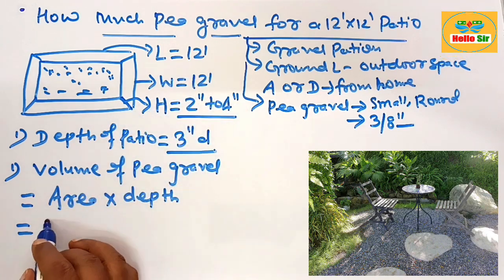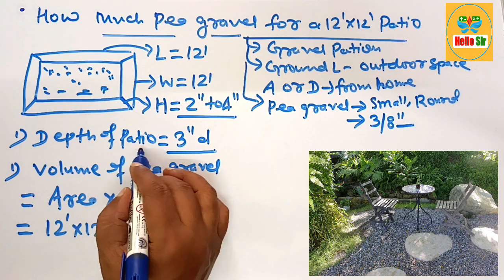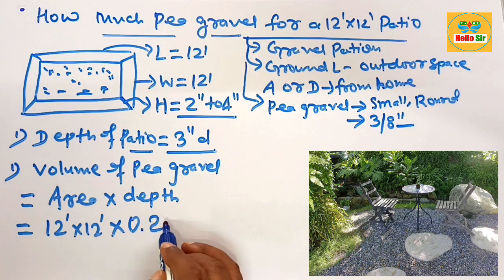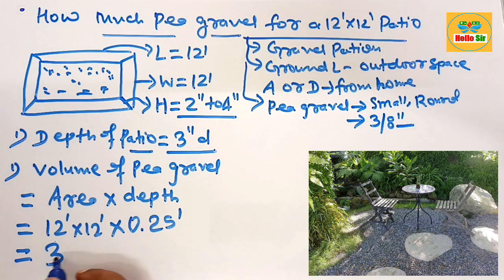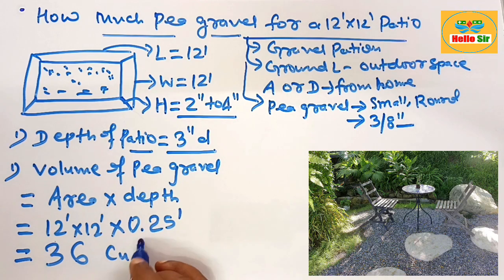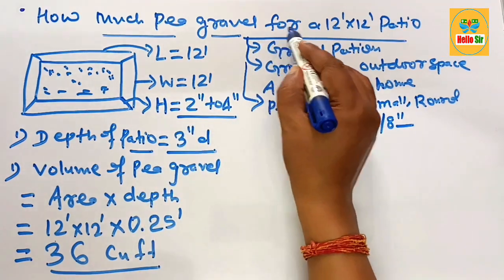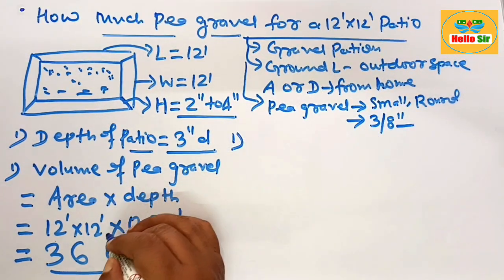The area that is 12 foot multiply 12 foot and the depth of your patio is 3 inch that will be equal as 0.25 foot. After multiplication this will come about 36 cubic foot. It means you need something like 36 cubic foot of pea gravel to build a 12 foot by 12 foot patio.